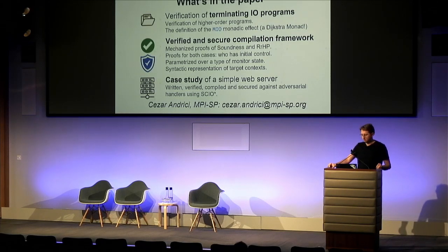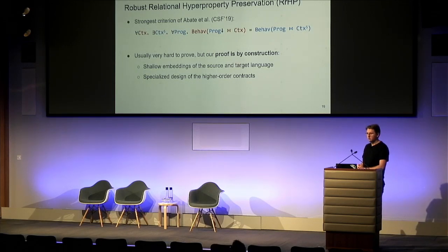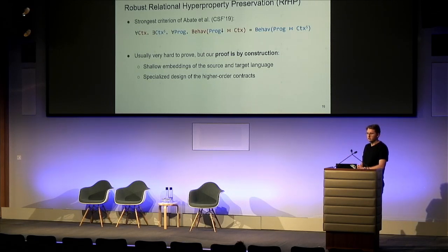Q: When you indicate that the proof is by construction, do you mean that for every unverified context you can actually generate — as an algorithm — the verified context? A: Yes. We defined a back-translation function from unverified context to a verified context.